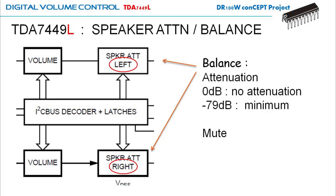Now let's see the speaker attenuator, or balance control, which is an individual control for the left and right channel. There are about 80 steps from zero dB to minus 79 dB, and then complete mute of the left or right channel. This is individual access, not like the volume control or gain control which simultaneously controls left and right — the balance control is different, it is individually controlled.